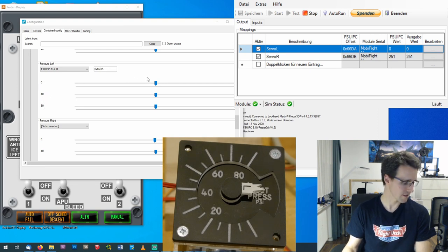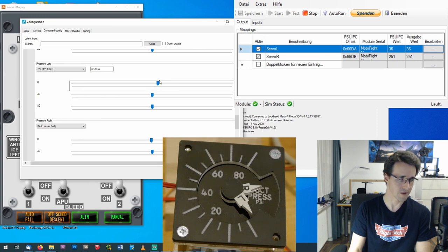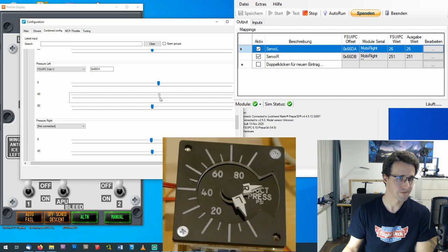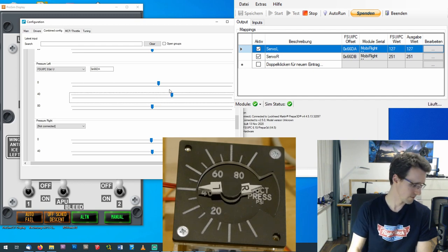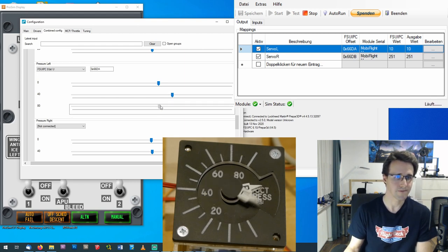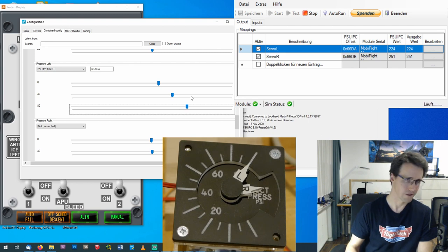So let's set the left needle to the zero point. You can do this by drag and drop or using the mouse wheel or just the arrow keys. I think this is the right position here and now the 40 position. There we are and the 80 position. There we go.